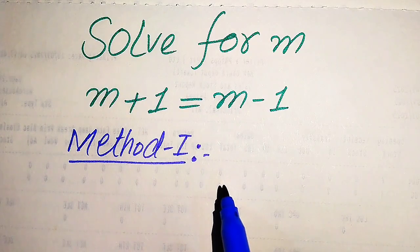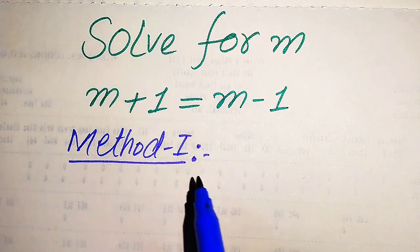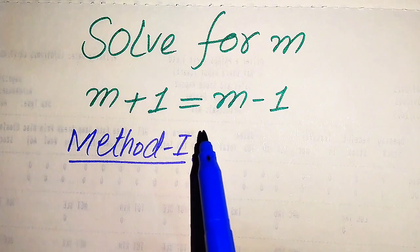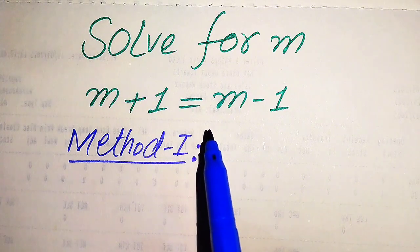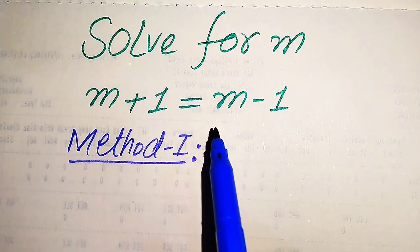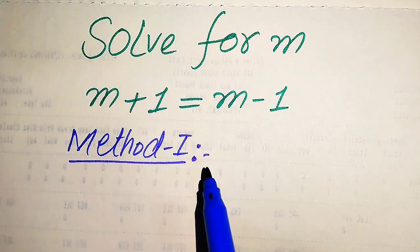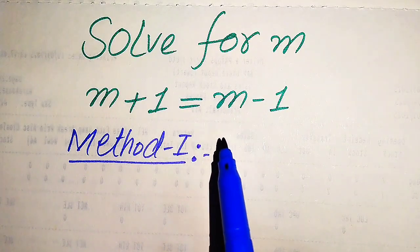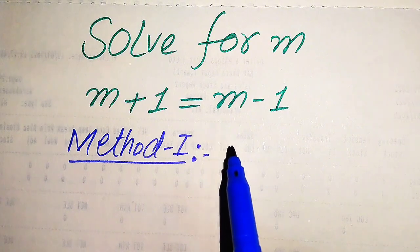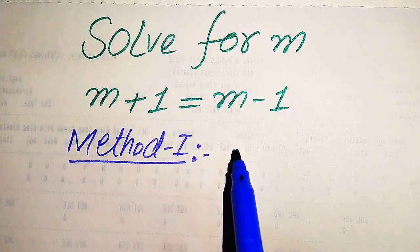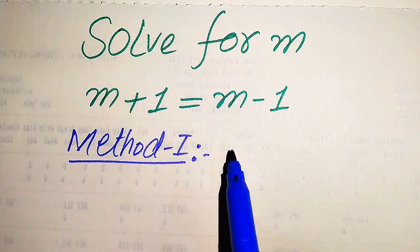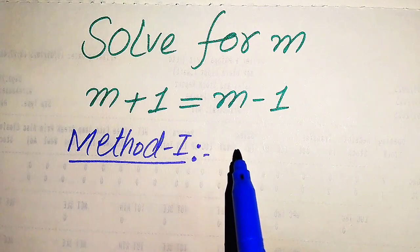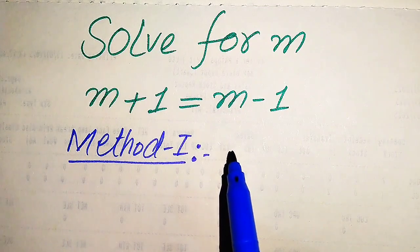The reason is: if in your exam the question asks you to find the value of m or find the root of this equation, then you need to use our first method. But if the question asks you to determine the solution of this problem, then you can directly move to our second method. Both methods are valid for these types of questions.